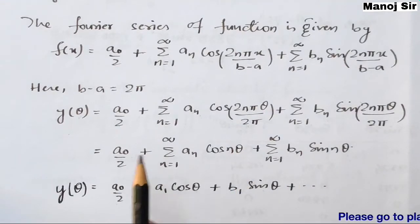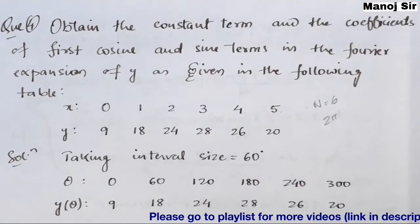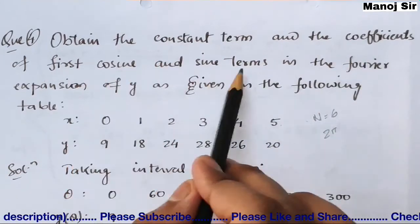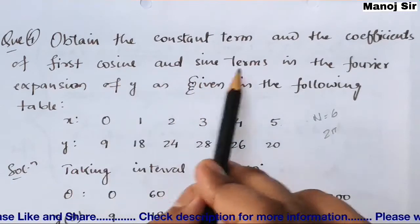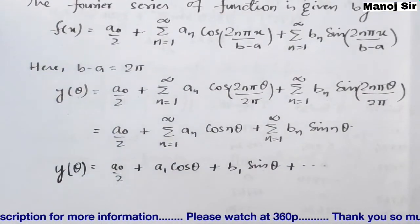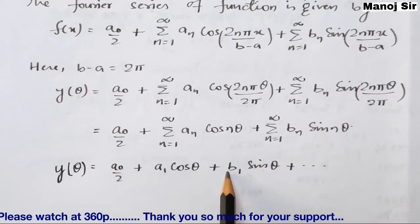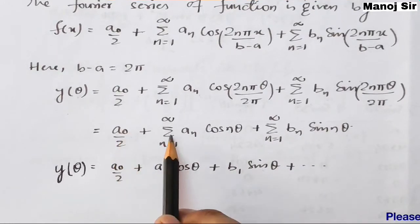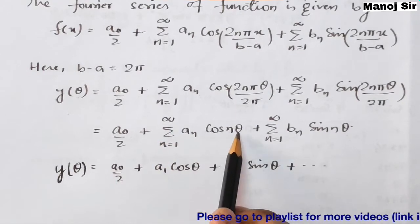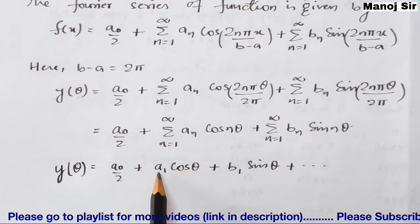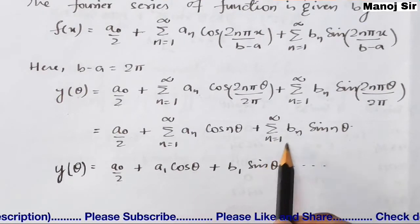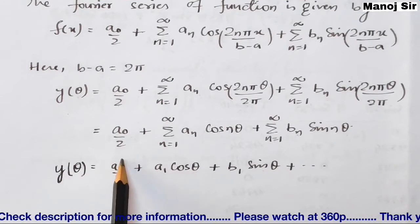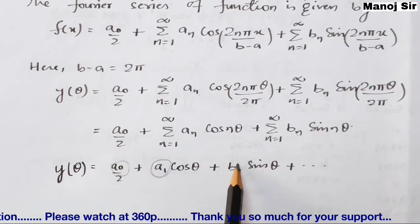The problem asks for the constant term, the coefficient of the first cosine term, and the coefficient of the first sine term. Putting n=1 in the simplified formula gives: y(θ) = a₀/2 + a₁ cosθ + b₁ sinθ + ... So we need to find a₀, a₁, and b₁.